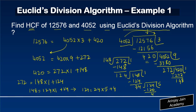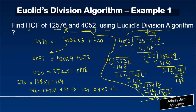Now I divide 24 by 4. Four times six gives 24, and therefore the remainder is zero. Finally, this is ended — the remainder is zero. The number that divided last is 4, so the highest common factor of 12576 and 4052 is equal to 4.